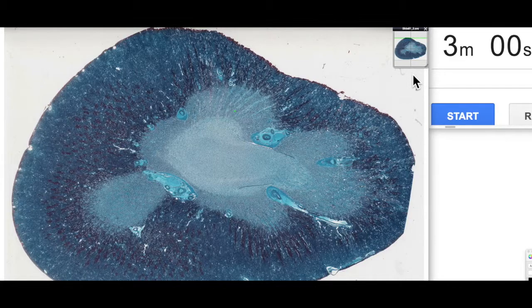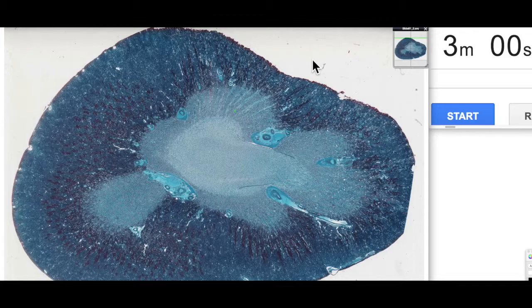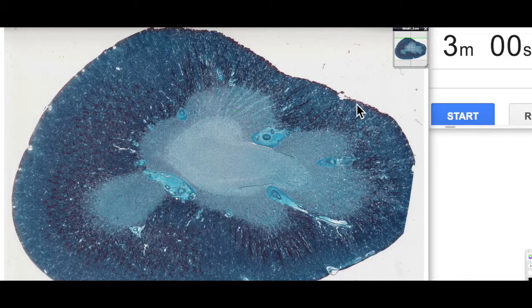This big blue blob here is actually a section of the kidney. Out here is the outer cortex, this is the medulla, a couple of parts of the medulla. We're going to focus on this part here. So let's start our three minutes.